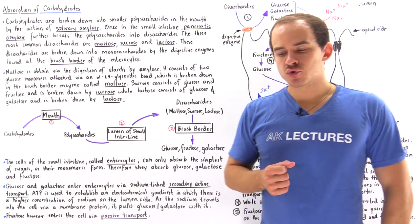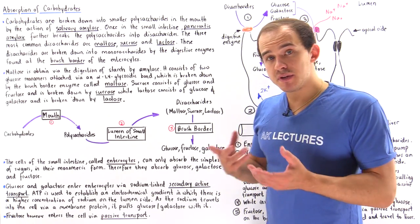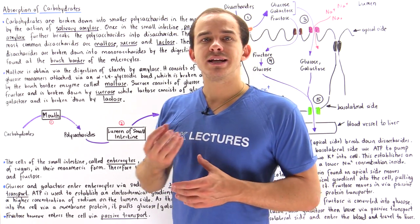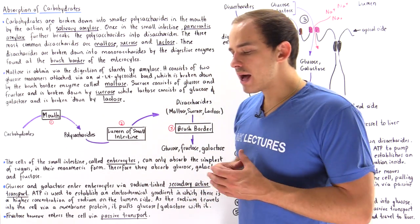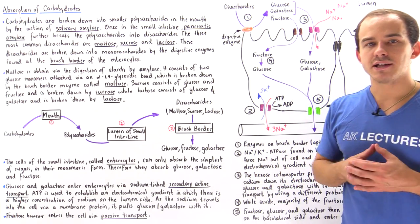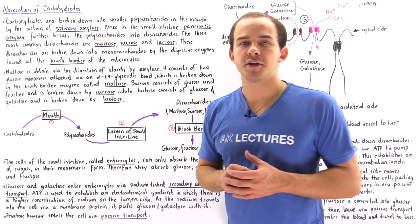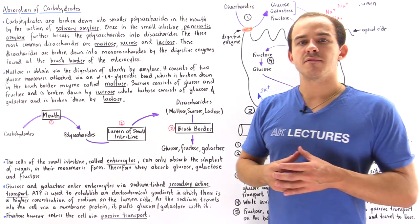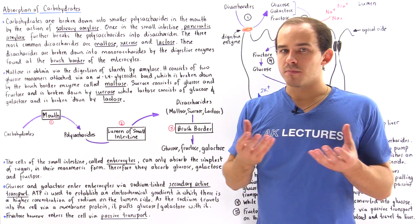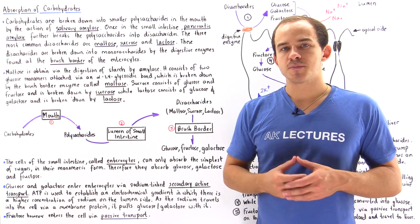When we eat carbohydrates, these carbohydrates begin the process of digestion and breakdown in our mouth. In the mouth, we release a special type of digestive enzyme known as salivary amylase. What salivary amylase does is it breaks down the carbohydrates into smaller polysaccharides.